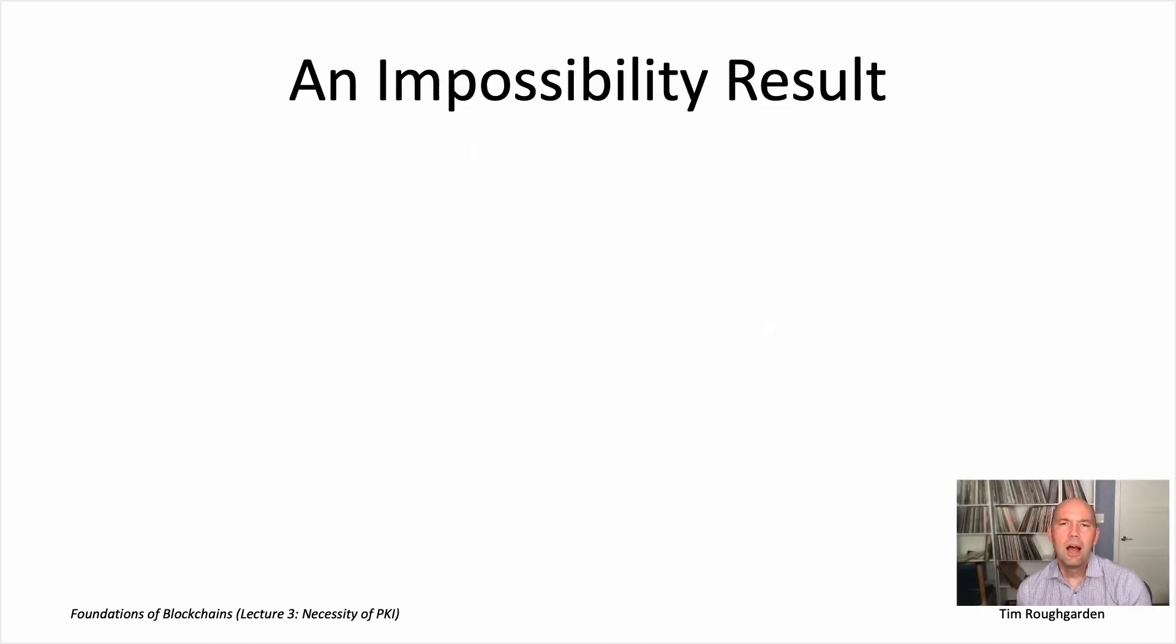So, impossibility results. Theory and math, like we've been doing in the last couple lectures, is great for proving positive results, possibility results, like the rigorous guarantees that we proved for the Dolev-Strong protocol in the previous lecture.